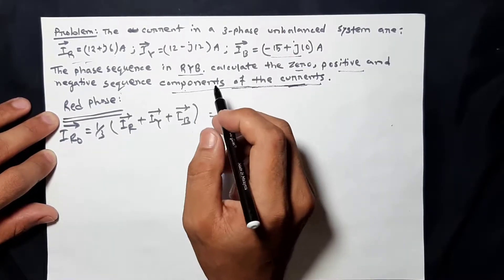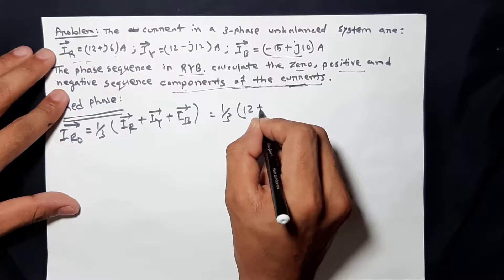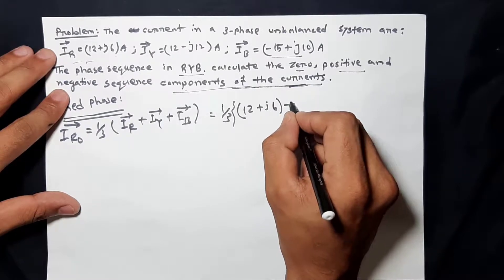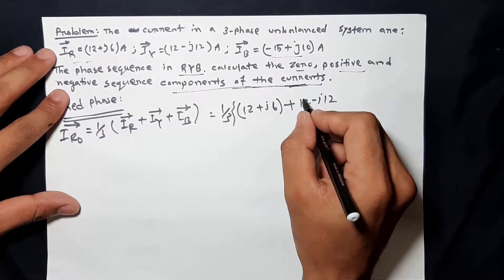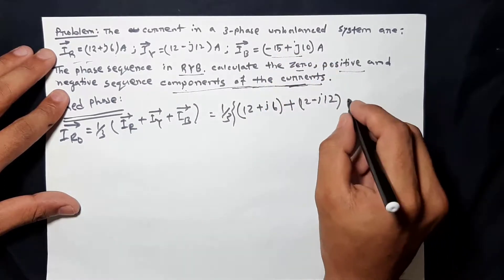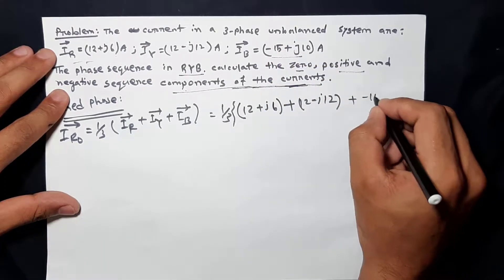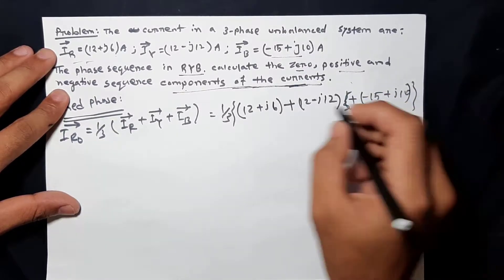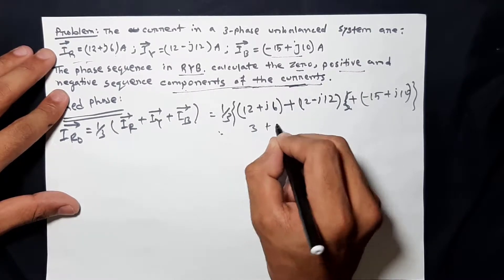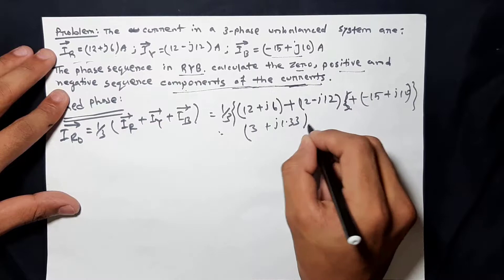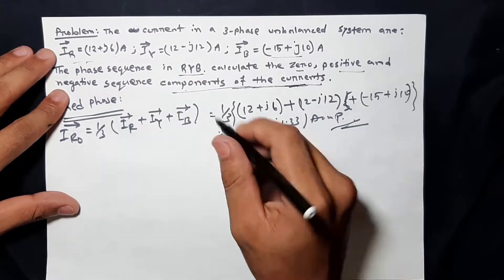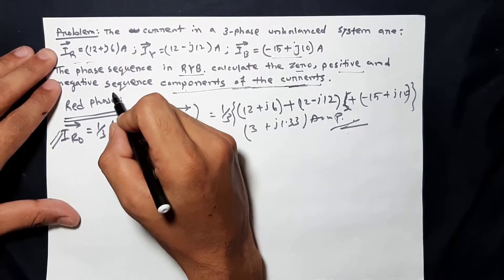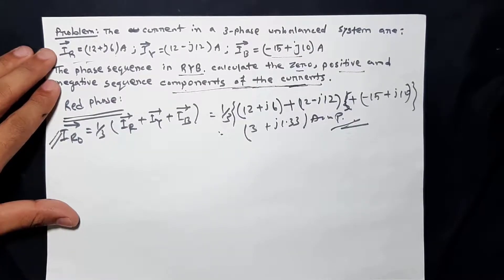One by 3: (zero + j6) + (zero − j12) + (−zero + j10). So if we have the calculation, we can add: 3 plus 1.33 A. If we add a simple 3-0, we can resolve the calculation.